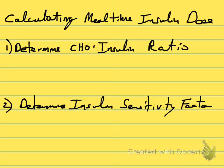Hey guys, today I want to talk about calculating mealtime insulin doses. There are two components to this calculation, two things you have to figure out. The first is the carbohydrate-to-insulin ratio, and the second is the insulin sensitivity factor, which is also called the correction factor.